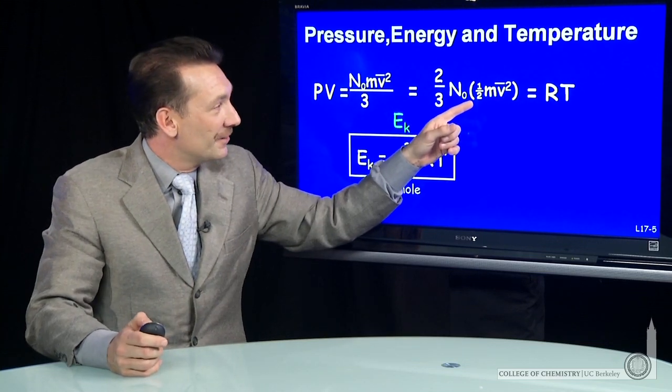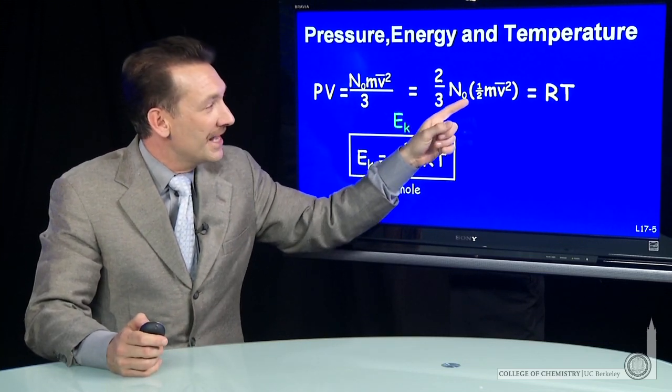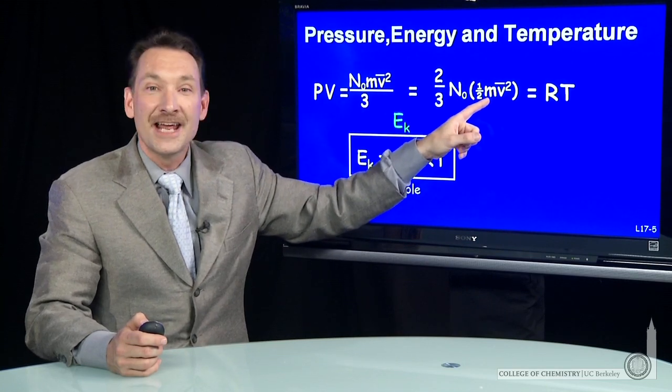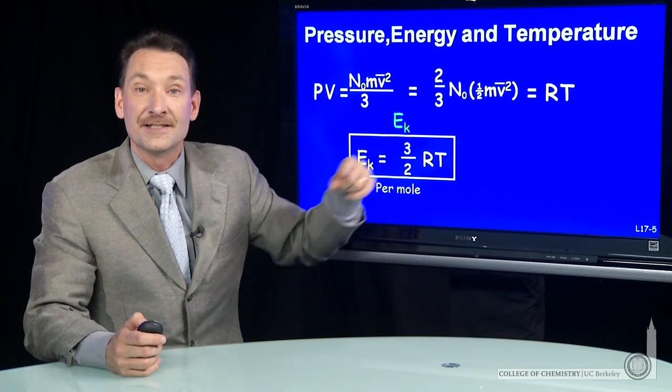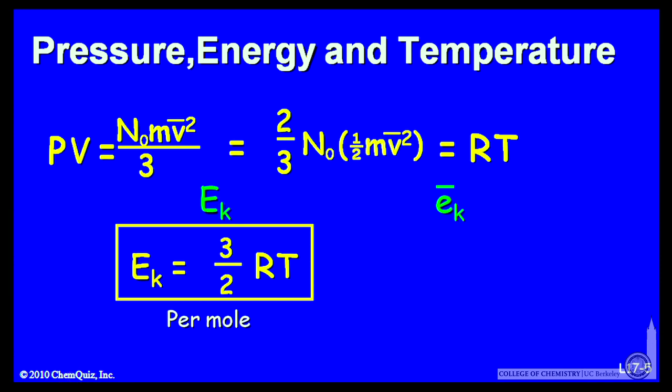Now I can divide through here by n0 again and get just the kinetic energy per particle instead of the kinetic energy per mole. So the kinetic energy per particle, dividing through by n0, is three halves kBT, where kB is the Boltzmann's constant.